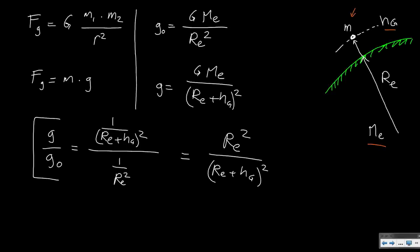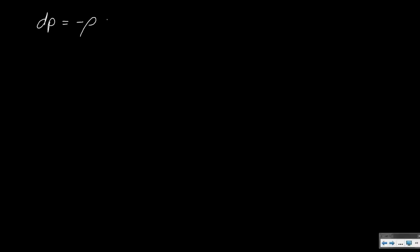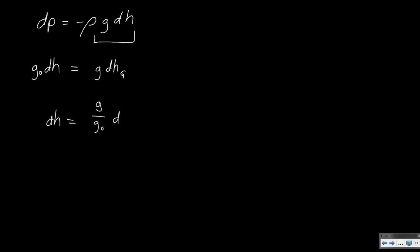This relation we will now use to see what the effect is on the hydrostatic equation. In the hydrostatic equation we have dp equals minus rho times g times dh. Assuming we have the same pressure difference, we want to see what the difference in altitude is. In one case we used g0 with the geopotential altitude, and in the other we should have used the real g with the geometric altitude. This shows the relation between the two types of altitudes: a change in geopotential altitude is g over g0 times the change in geometric altitude.